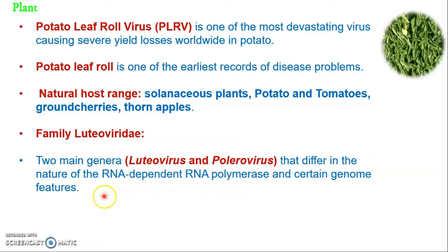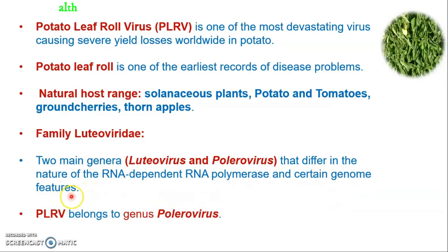The classification is based on the RdRp enzyme — RNA-dependent RNA polymerase — which is responsible for the replication of these viruses. Because of the nature of the RdRp, these two genera differ from each other, along with some other genomic features. Potato Leaf Roll Virus belongs to the genus Polerovirus.